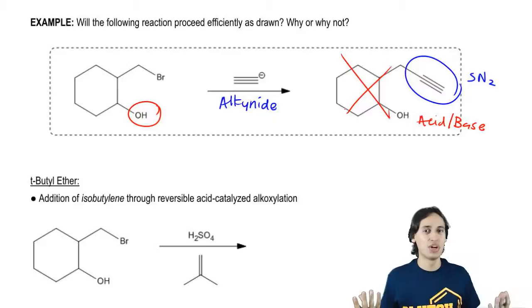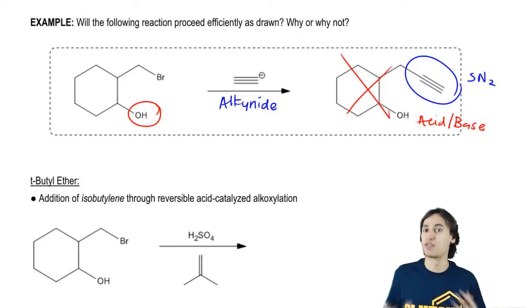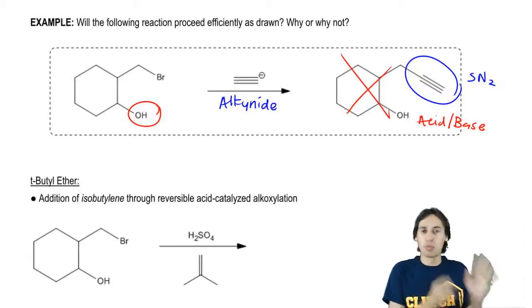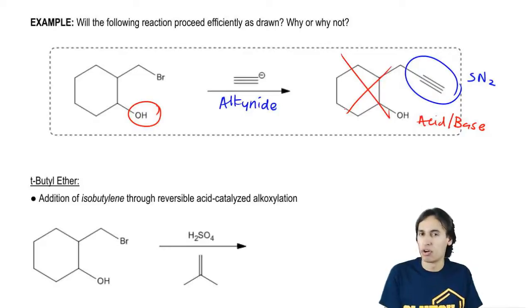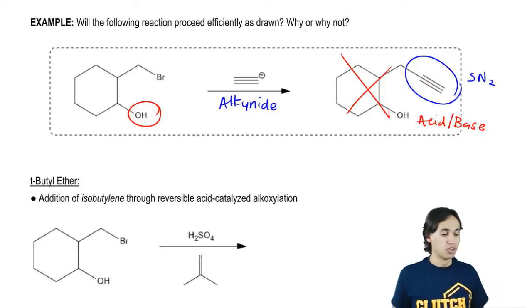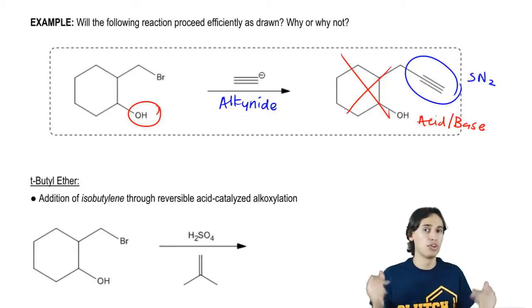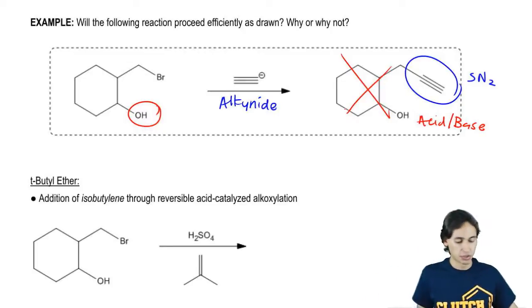Well, scientists determined, hey, you know what? Alcohols are messing up a lot of different reactions. So if we can figure out a way to get rid of the alcohol for a few minutes, then run the rest of the reaction and then regenerate the alcohol, that would be really helpful. And that's exactly what we're going to do with our protecting group. So the first type of protecting group that you need to know and probably one of the more common ones is a tert-butyl ether protecting group.